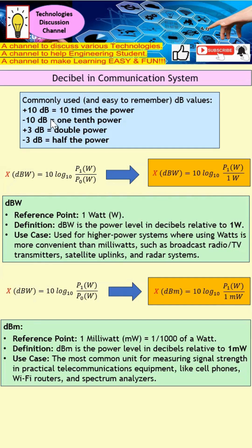Next, +3 dB and -3 dB. When we add 3 dB to the original power, the power actually doubles. For example, for 2 watts, adding 3 dB makes it 4 watts. For minus 3 dB, with the same 2 watts, adding -3 dB makes it 1 watt, which means the power is reduced by half.